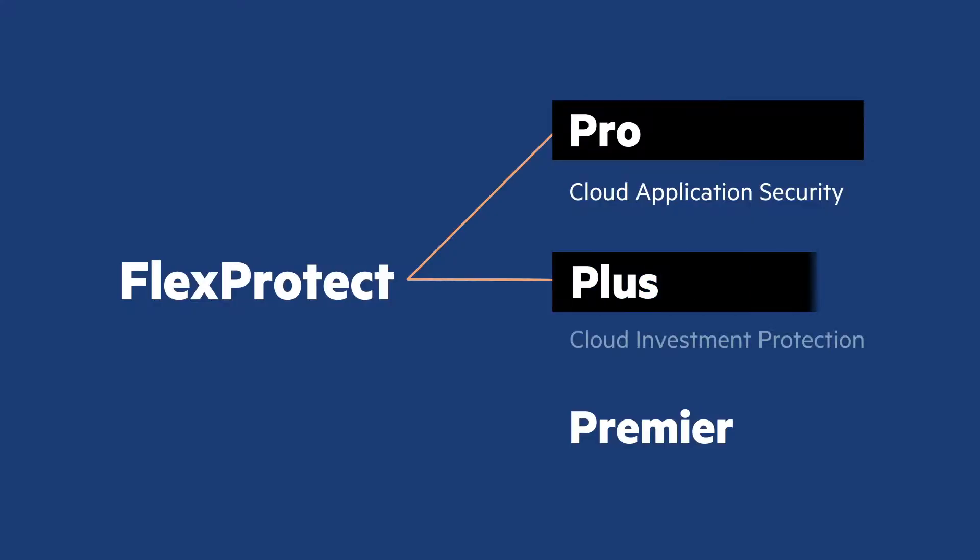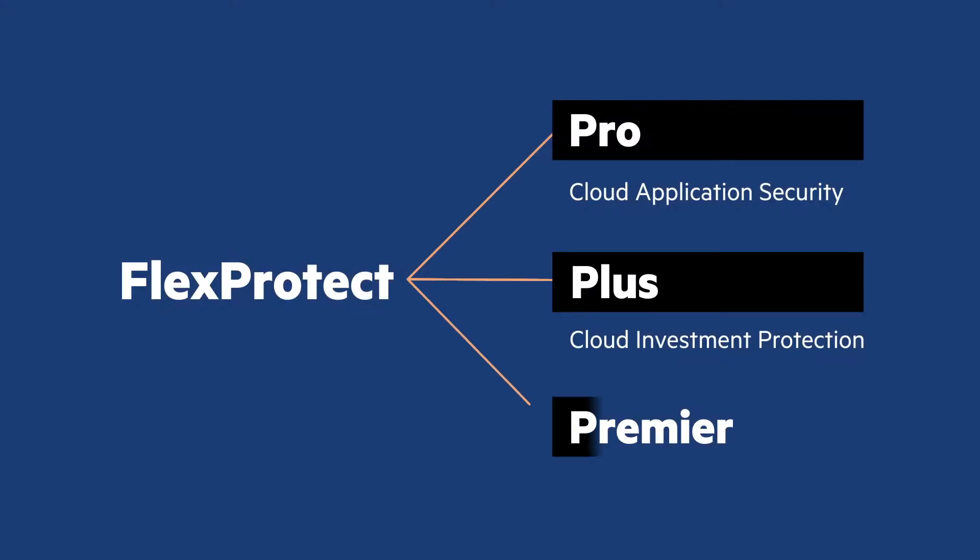The second tier is really the cloud investment protection tier, and that's the one that's already been available for some time and has been very successful with our customers who are thinking about moving their workloads from on-premise to the cloud and are looking for that investment protection.